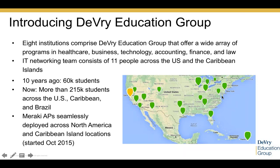DeVry Education Group often surprises people in that it is larger than just DeVry University. In our IT team, we have a networking team of about 11 persons responsible for network operations for our enterprise. A decade ago we were at 60,000 students, but now through acquisitions and growth we're at about 215,000 students in the United States, the Caribbean Islands, and Brazil. Today we're excited to share our story of how we rolled out Meraki access points across our North American and Caribbean island locations, which began last fall.